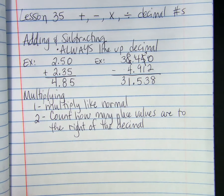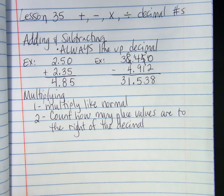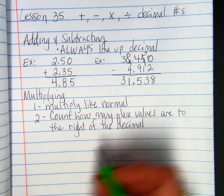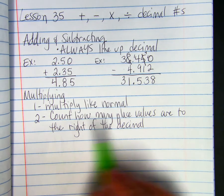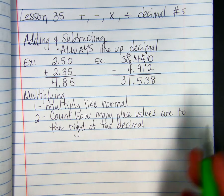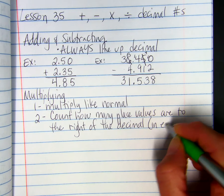you need to count how many place values are to the right of the decimal. You count them in the factors. Factors are the two numbers that are being multiplied. So, count how many place values are to the right of the decimal in each factor.